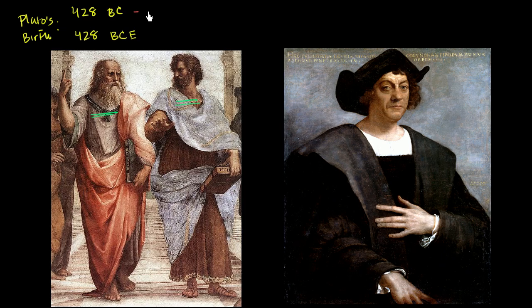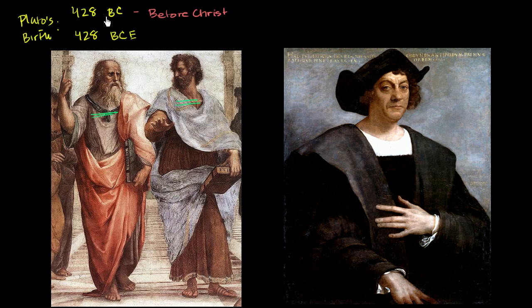BC literally stands for before Christ. So if the date is written 428 BC, the implication is that this is 428 years before the birth of Christ. We'll see in a second that that's not exactly right, but that's what the implication is.